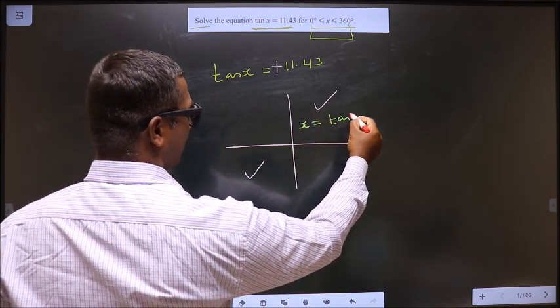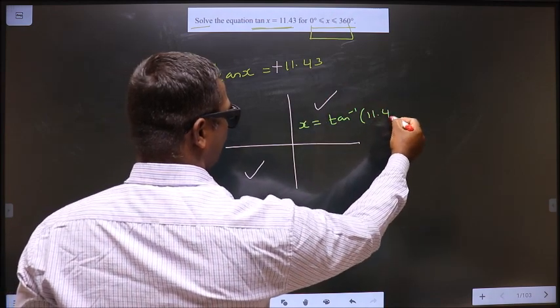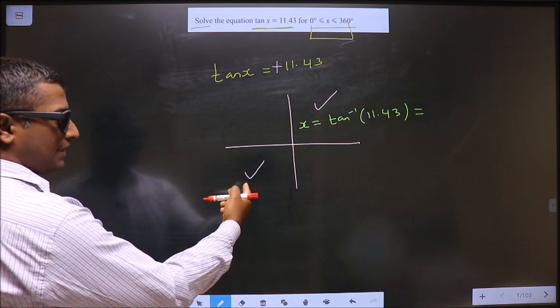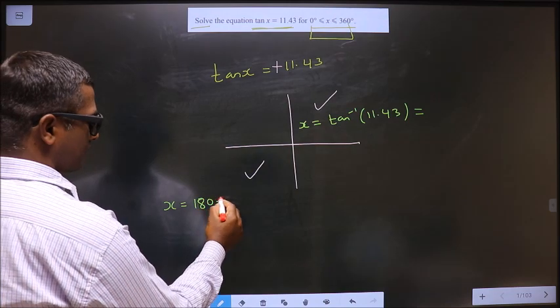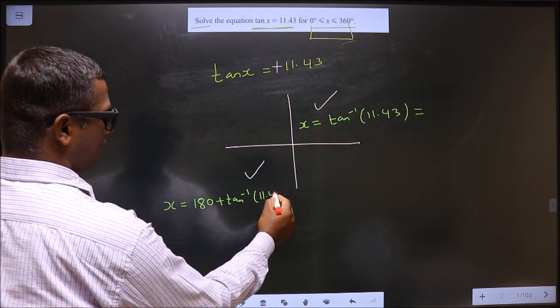Now to get an angle in the first quadrant, it is directly tan inverse of this 11.43. And to get an angle in the third, it is 180 plus tan inverse 11.43.